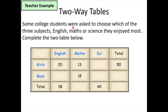The question hasn't told me how many students were asked altogether. But looking at the table, I can immediately fill in one box: if there are 38 pupils altogether who like English and 20 of them are girls, the rest must be boys. So 38 take away 20 gives me 18.